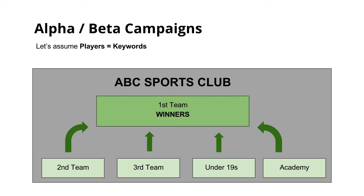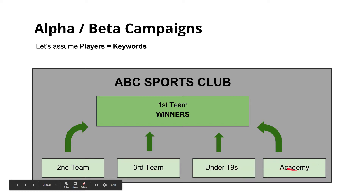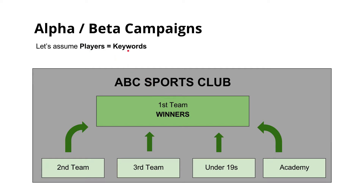The structure of every sports club is more or less the same. We have the first eleven, or the first team, where all the best players are selected. But then there are lots of other teams below the first eleven — the second eleven, the third eleven, possibly juniors, under-19s, or an academy team. And all these teams will feed the best performing players up to the first eleven.